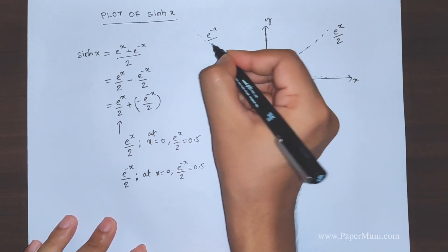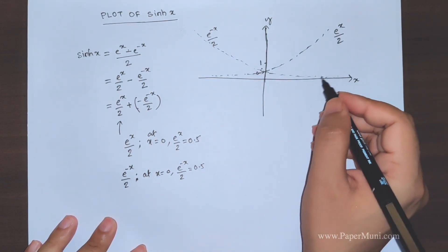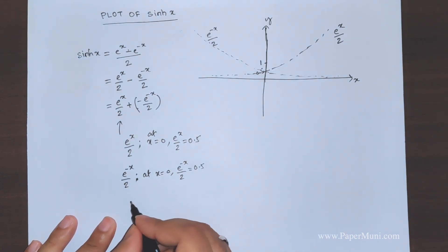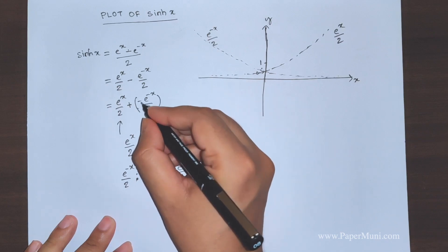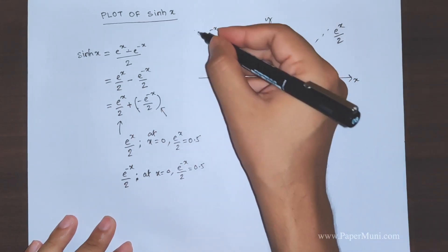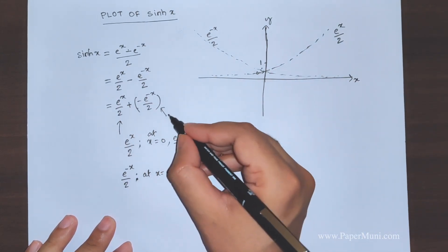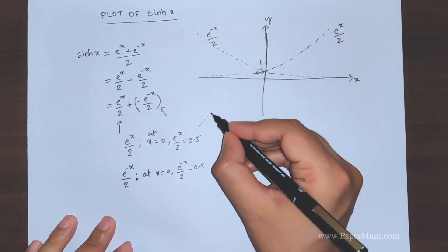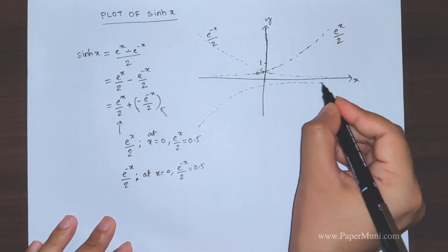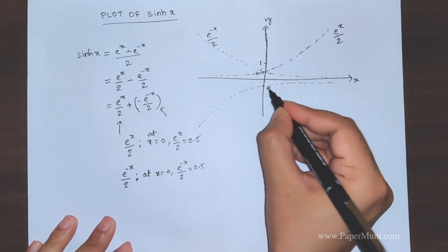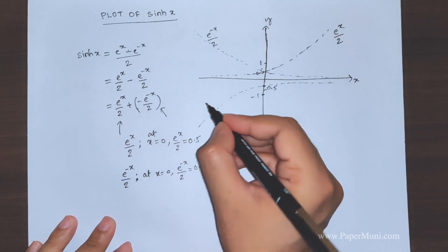Now we need minus of this, we need the graph to be exponential minus x by 2 with a minus sign. If we put minus sign on this, these are all our positive values, so we'll get simply an inverted graph, it will be reflected about x-axis. So this is minus 0.5, and this one is minus 1.